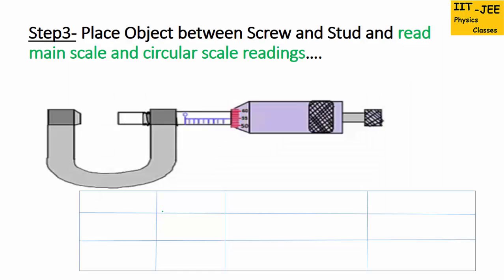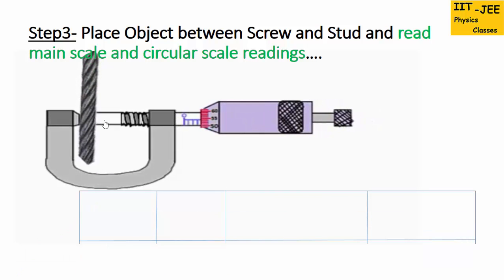Now step 3: we have to place the object between the screw and stud — between these two ends — and then read the main scale and circular scale readings. Let's place the object between screw and stud. Now we have placed the object. The main scale reading is 0, 1, 2, and 3 — so 3 mm is the main scale reading. And the circular scale reading is 54, as this circular division is perfectly coinciding. So 54.